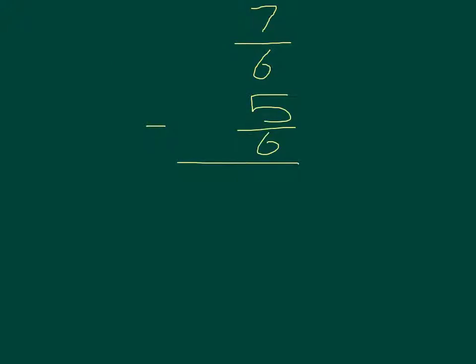Now that we've changed 1 sixth to 7 sixths, we can subtract 5 from 7, and we get 2. And since 6 is on both of our fractions, it is our common denominator, we'll keep that the same. Because 2 sixths isn't an improper fraction, we have our answer.